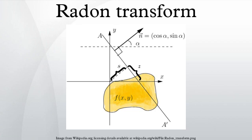Concretely, the parameterization of any straight line L with respect to arc length z can always be written, where s is the distance of L from the origin and α is the angle the normal vector to L makes with the x-axis. It follows that the quantities s, α can be considered as coordinates on the space of all lines in R², and the Radon transform can be expressed in these coordinates.